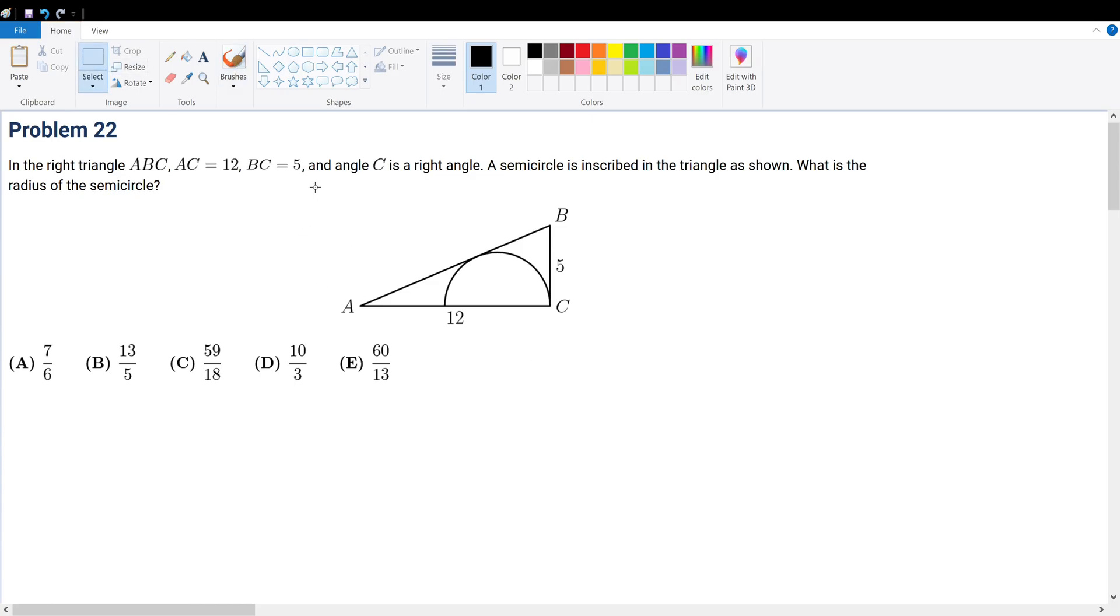When you have a shape that is not easily apparent for how to approach it, deconstruct it into smaller shapes that are easier to work with. So I'll copy-paste it for easier convenience, and we're trying to find the radius here.